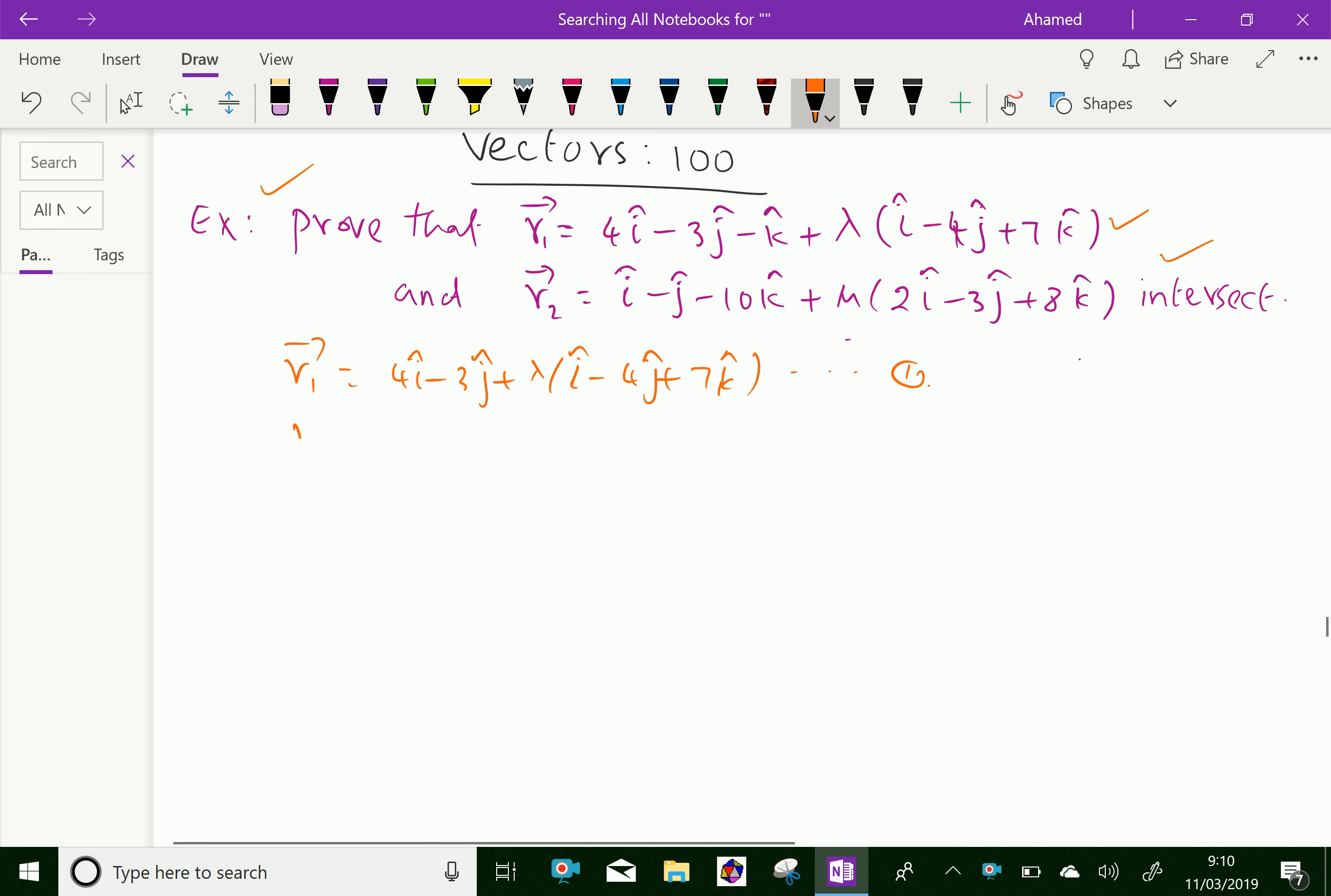Then r2 vector equal i minus j minus 10k plus mu into 2i minus 3j plus 8k, equation 2.